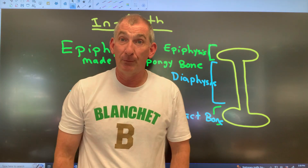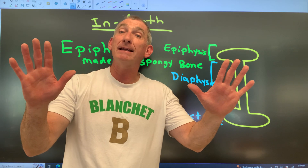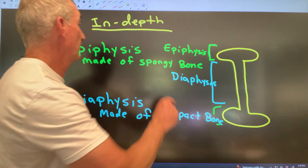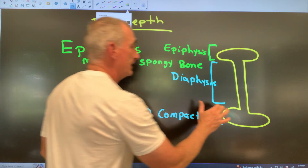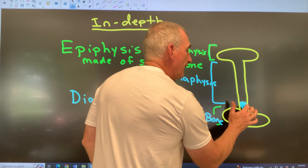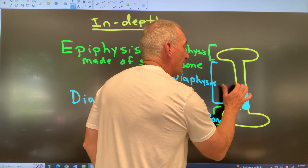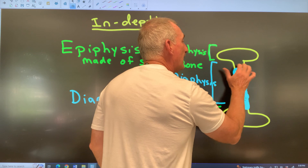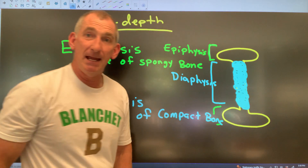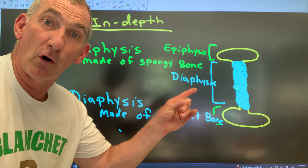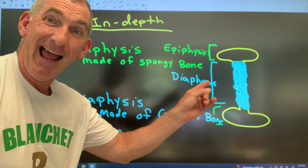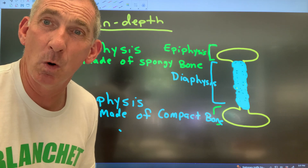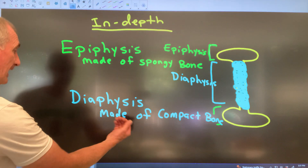This is going to be a theme throughout the whole semester — everything in your body wants to have a covering around it. The diaphysis has a covering: it's a thin membrane that goes around it. Maybe on Monday we'll look at a real bone and see that thin membrane around the diaphysis. It's called the periosteum.